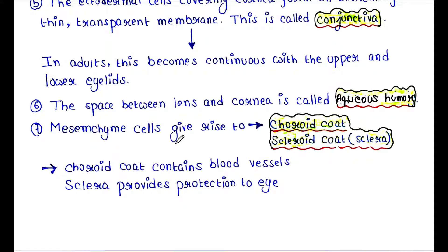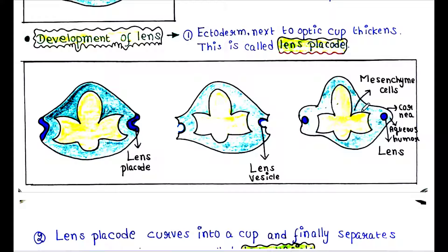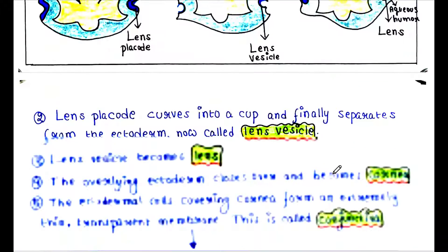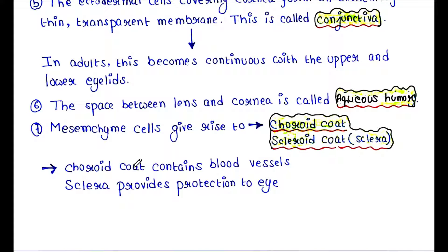Mesenchyme cells give rise to the choroid coat and the scleral coat, also called the sclera. The choroid coat contains blood vessels, and the sclera provides protection to the eye.